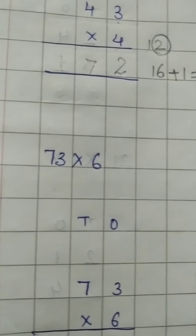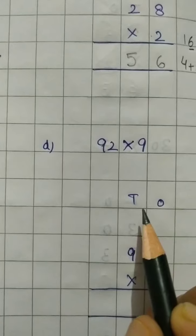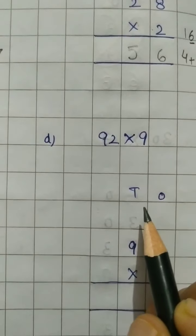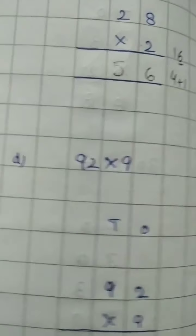Part c is 73 multiplied by 6 — that is your homework. And part d is 92 multiplied by 9 — which is again your homework.